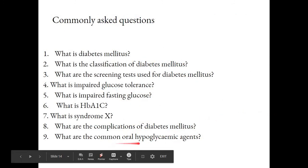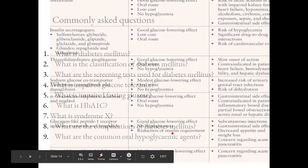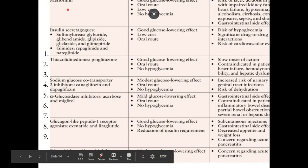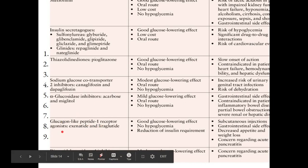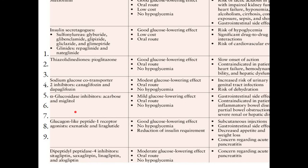What are the common oral hypoglycemic agents? Metformin from the biguanides; insulin secretagogues including sulfonylureas (glibenclamide, glipizide, gliclazide, glimepiride) and glinides (repaglinide, nateglinide); thiazolidinediones (pioglitazone); SGLT-2 inhibitors; alpha-glucosidase inhibitors (acarbose); GLP-1 receptor agonists; and DPP-4 inhibitors. Notably, insulin secretagogues carry a risk of hypoglycemia — know at least one advantage and disadvantage of each drug class.